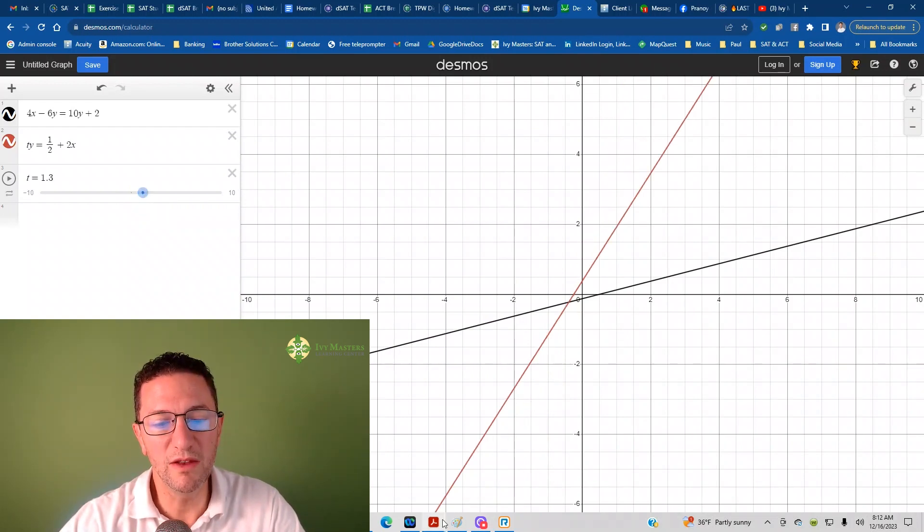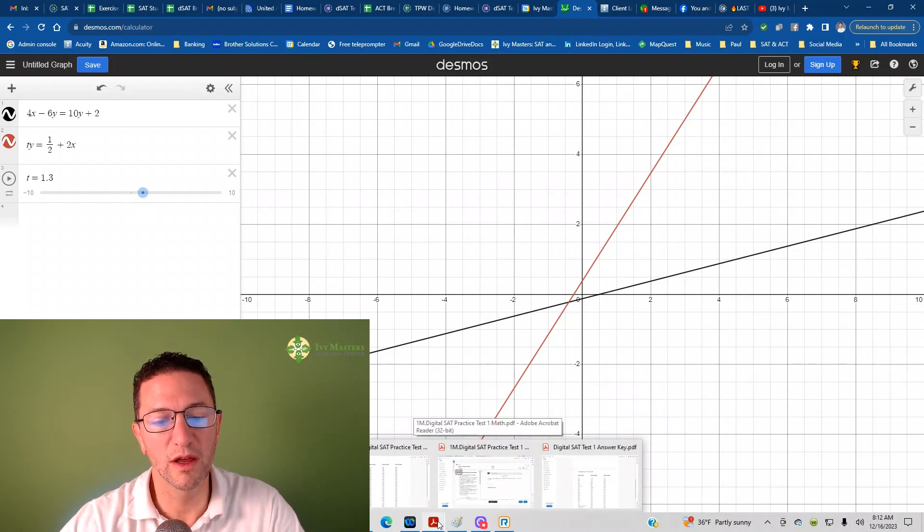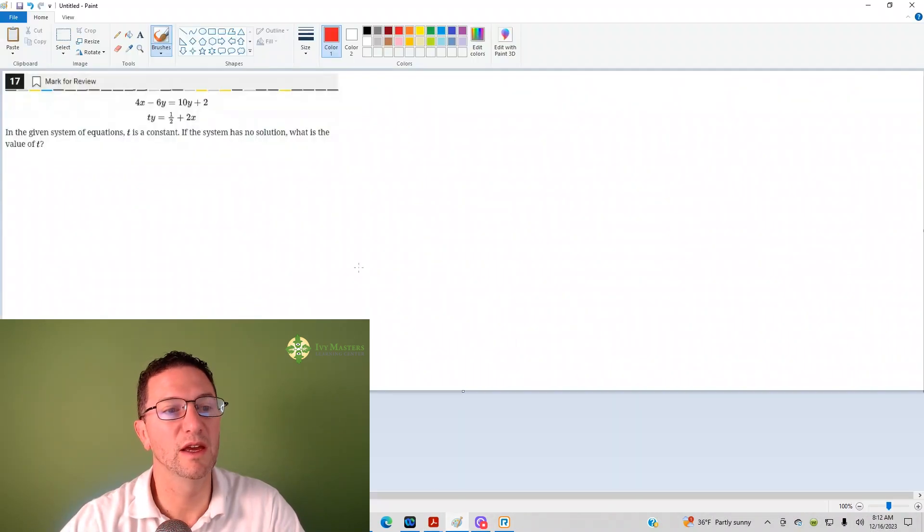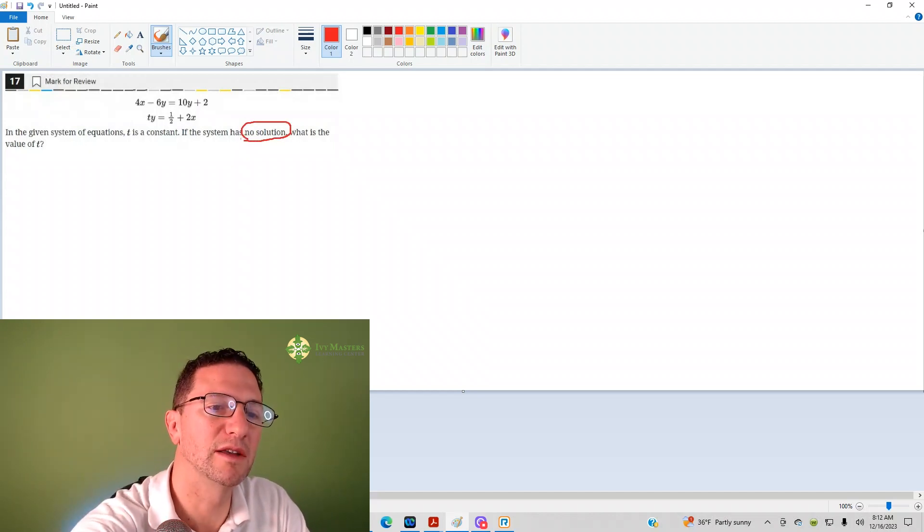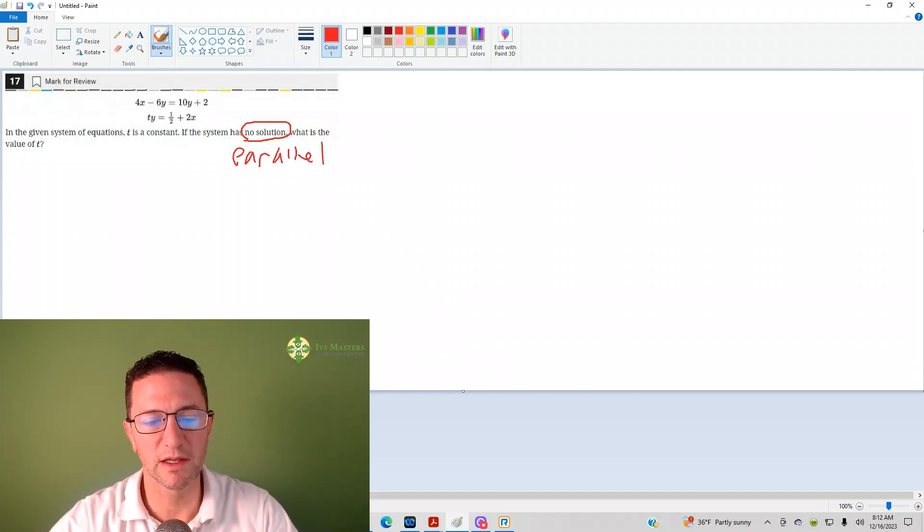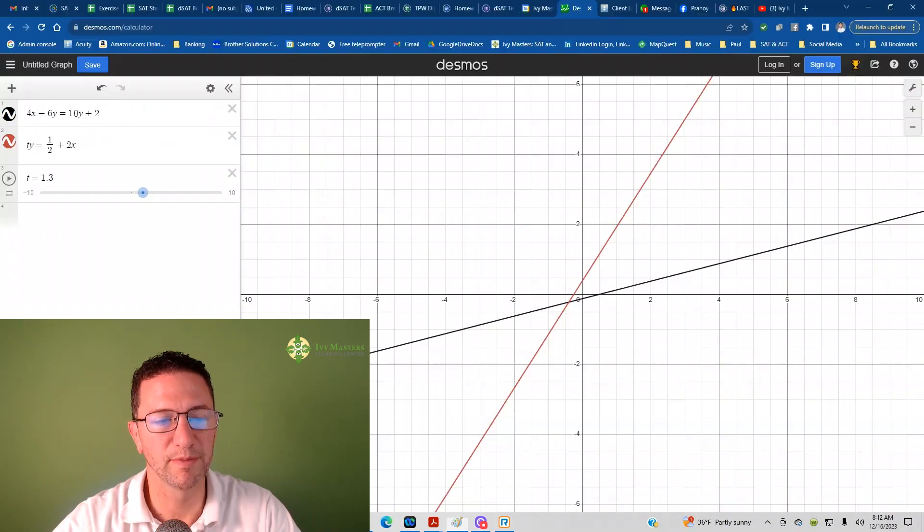One thing you need to know in order to get this question correct is that if you've got no solution, that means that the lines are parallel. So I'm going to mess with that slider until my lines are parallel.